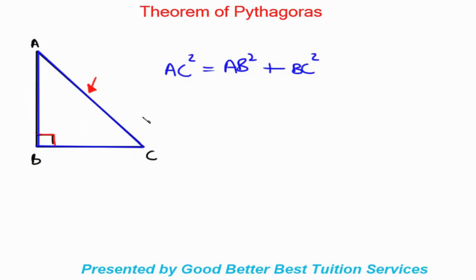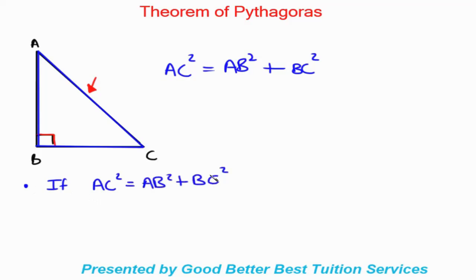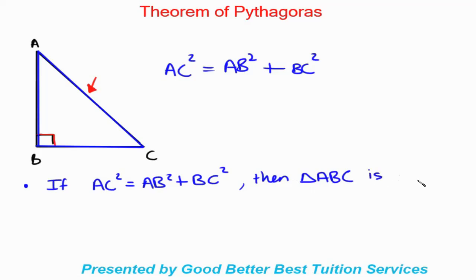That's the basic theorem. Now for situations where they give you the sizes of the different sides and ask you to work out whether it is a right angle triangle: if AC squared is equal to AB squared plus BC squared, then triangle ABC is a right angle triangle.